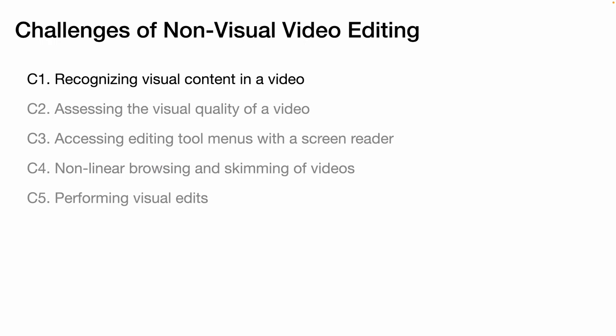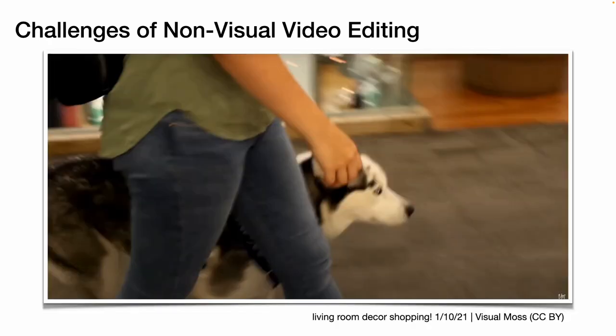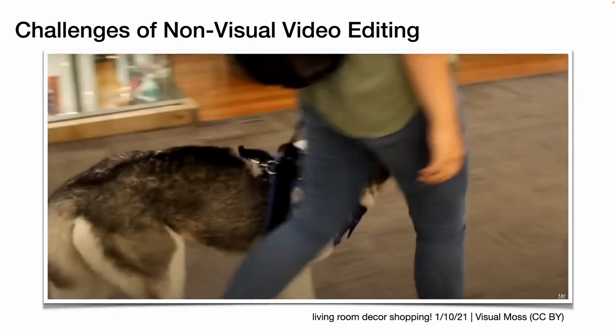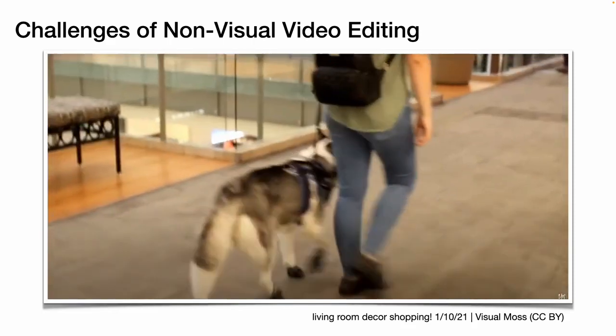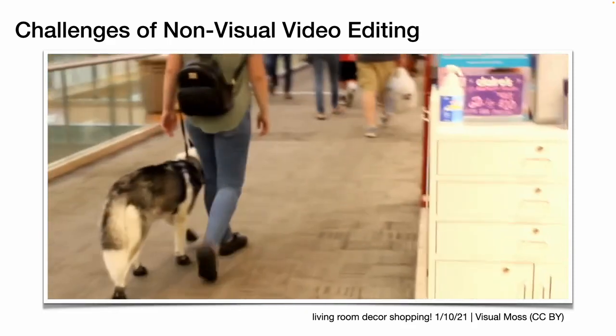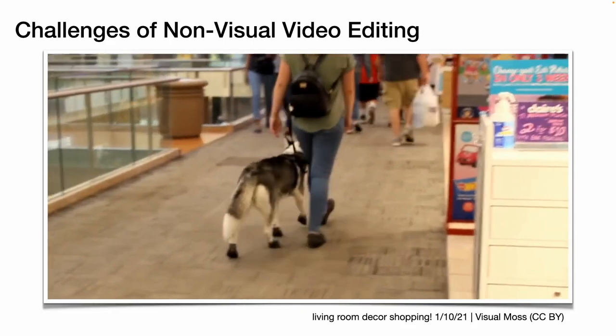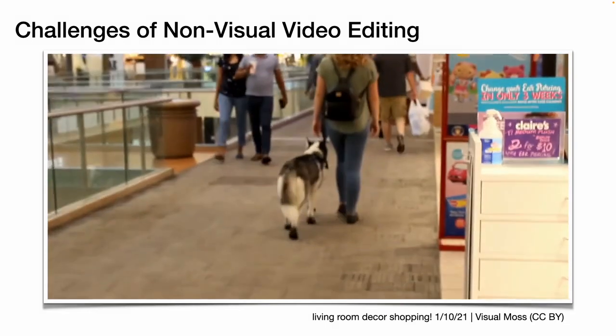First, it is hard to understand the content of the video, such as settings and actions. In this example, it is hard to find when she is turning around and walking toward the camera, because there is no distinct audio.